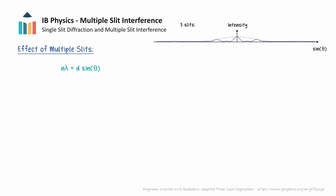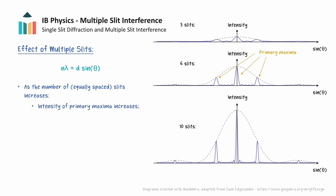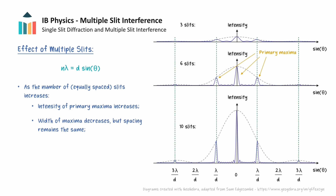We will now show some intensity graphs for 3, 6, and 10 equally spaced narrow slits. As the number of slits increases, the intensity of the primary maxima increases and the width of these maxima decreases, but their positions and spacing remain the same, so they become sharper and more easily identifiable. We also have small secondary maxima that appear between the primary maxima, and the number of these secondary maxima increases with the number of slits. Additionally, there is still an envelope from single slit diffraction which modulates the interference pattern in all of these graphs, determined by the width of the slits.